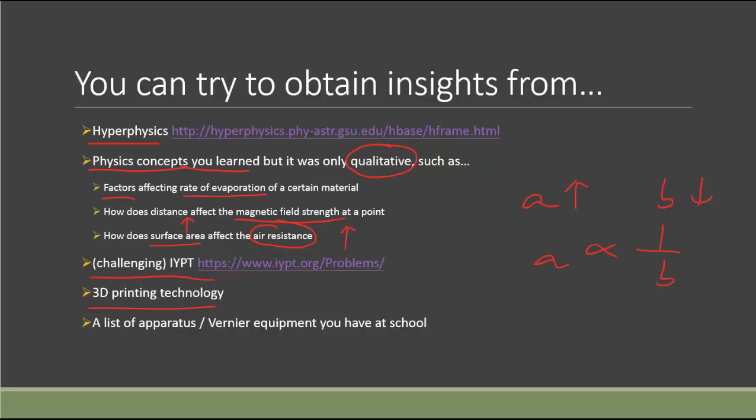And lastly, if you still don't have any ideas, it may be good if you just take a quick look on what kind of apparatus you have at school, or what kind of vernier equipment, the data logger you have in school. Because maybe there are some times you want to do a certain experiment, you just don't have the right data logger at school. So just simply looking at what you have available may help you to think of what to do directly.